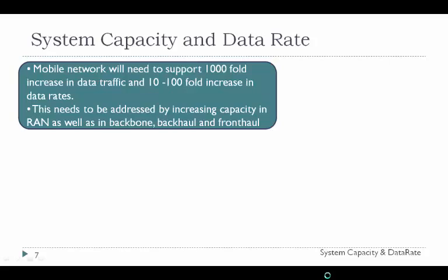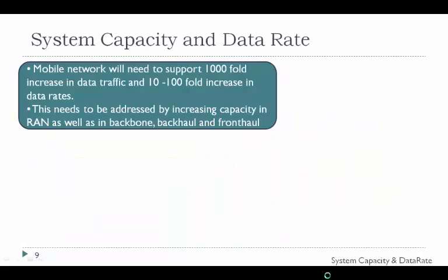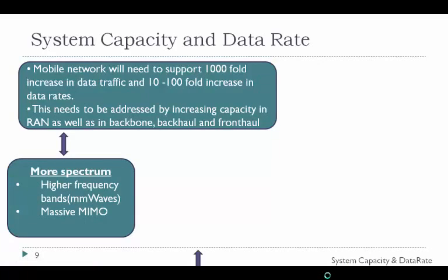Before going into further description, we will discuss what fronthaul and backhaul are and how they address the growing challenges in handling today's massive mobile traffic loads. Backhaul links interconnect the macro cell site — referred to as the baseband unit — to the mobile telephone switching office, based on Ethernet over fiber links via a 1 Gbps physical interface to the macro cell site. Fronthaul is associated with a new type of radio access network architecture consisting of centralized baseband controllers and stand-alone radio heads installed at remote cell sites located tens of kilometers away. The optical link that interconnects the centralized baseband units and remote radio heads is the fronthaul.